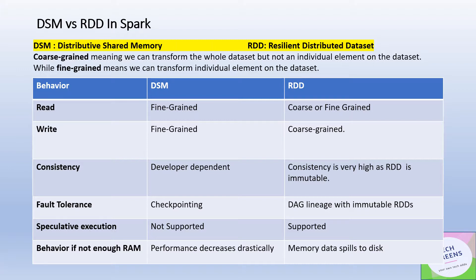Regarding fault tolerance: in DSM it is done through checkpointing — snapshots of the current running execution are taken in a timely manner, and if a fault happens it can be recovered from that checkpoint. In RDDs, fault tolerance is maintained through the DAG (directed acyclic graph) — lineage is maintained and represented as a DAG. On top of that, RDDs are immutable, so you will never lose the state of the RDD in case of a node failure, because all transformation steps are registered in the DAG.